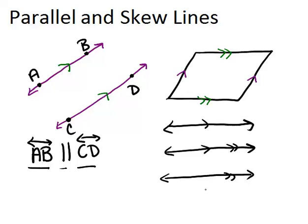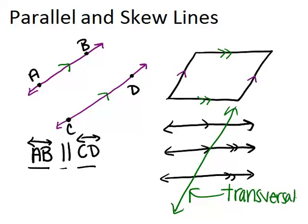Another word that you should know is the word transversal. Anytime you have parallel lines and another line crosses them like this, that crossing line is called a transversal because it cuts through the other parallel lines, the transversal.